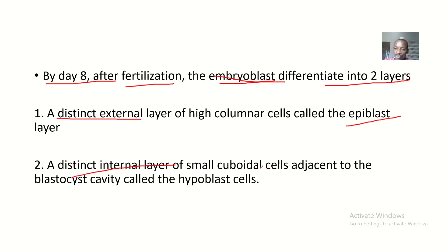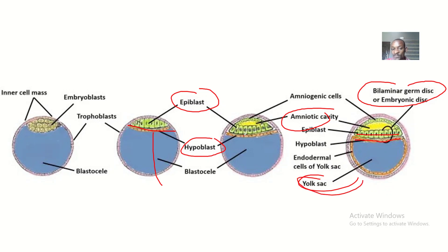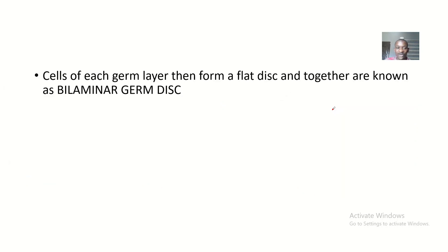The other distinct internal layer consists of small cuboidal cells adjacent to the blastocyst cavity, and this layer is called the hypoblast. So the inner layer is the hypoblast and the external layer is the epiblast. The hypoblast is related to the yolk sac, while the epiblast is related to the amniotic cavity.